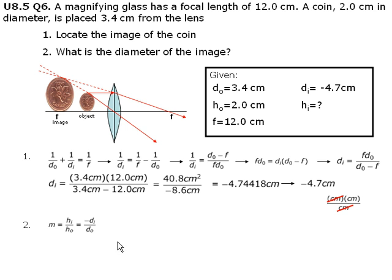For question 2, we also begin by writing down the equation that we will be using. Magnification equals the height of the image over the height of the object, which also equals the negative distance of the image over the distance of the object.